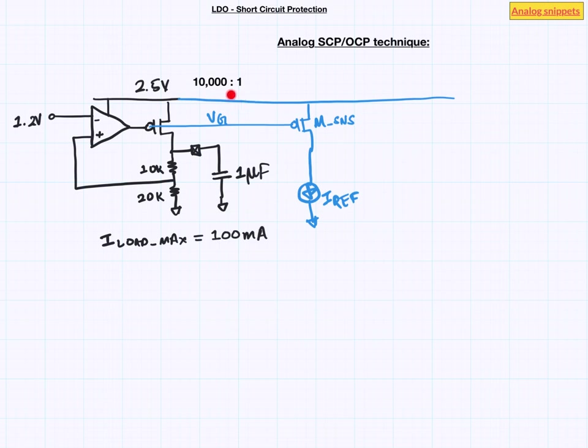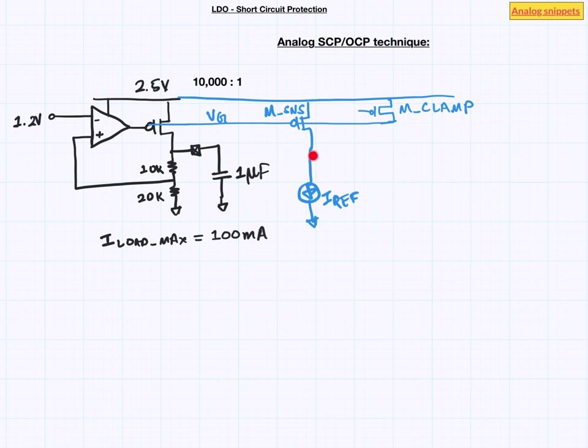We will use a PMOS to clamp the gate voltage. In order for this clamp PMOS to turn on its gate voltage needs to go low. But recall that in overcurrent condition this error amplifier voltage goes high. So, we need an inverting stage between this clamp PMOS and this error amplifier.